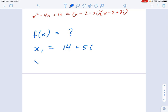And I want to know what's another solution. Well, by the complex conjugate theorem, it must be 14 minus 5i. If you have one complex root of a polynomial, then by the theorem that I just mentioned above, you must also have another complex root, which is the conjugate of the first. That's what the theorem tells us.